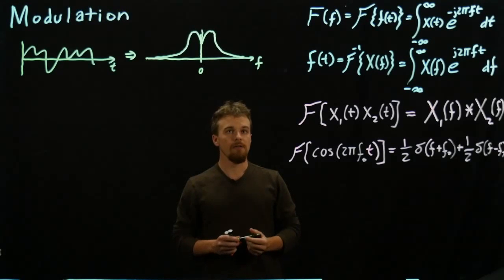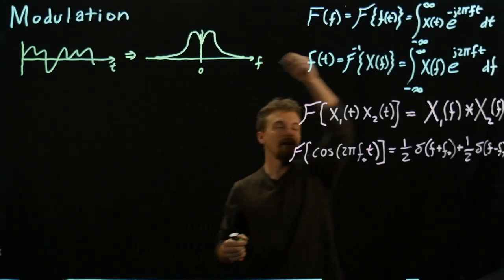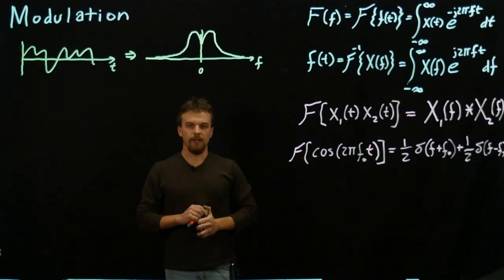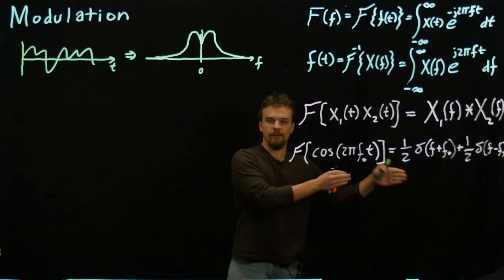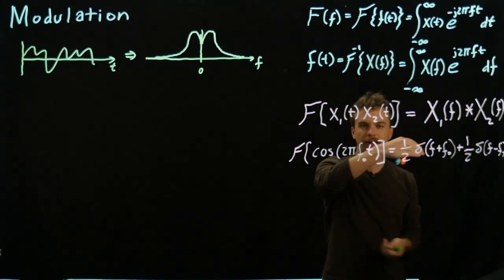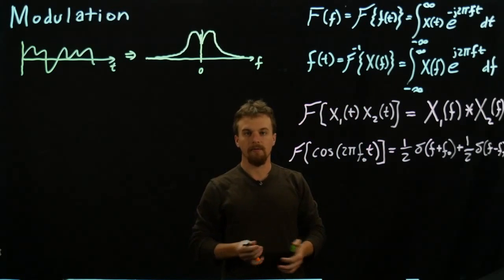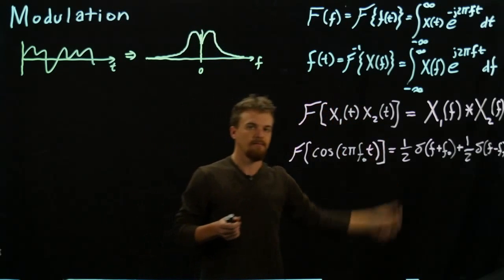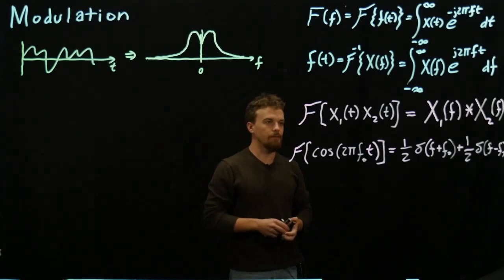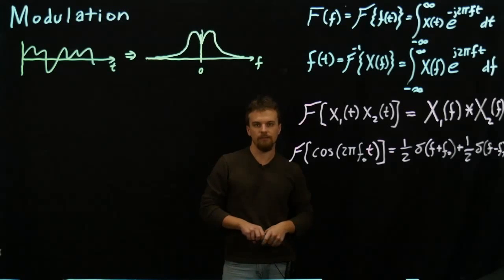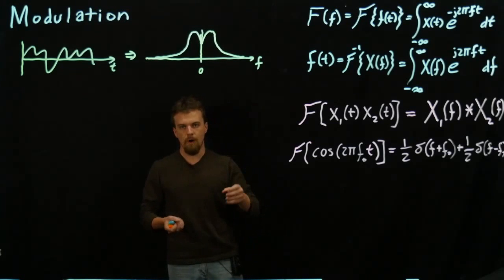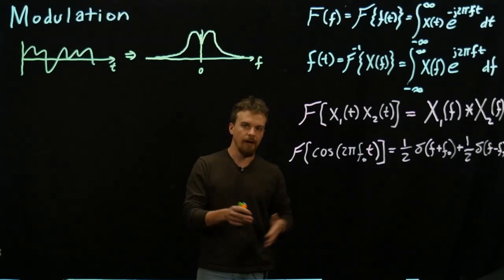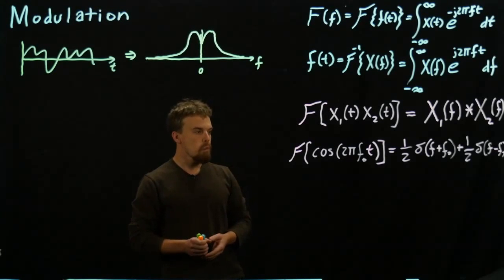We have this big frequency domain that goes out to infinity. What if we gave everyone a chunk of the frequency domain to work in? The question is how do we move our message to that assigned chunk. When you tune your radio to, say, 92 megahertz, that station is allowed to transmit around 92 megahertz — that's the idea.